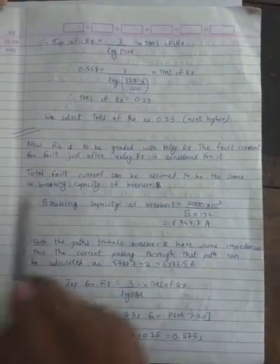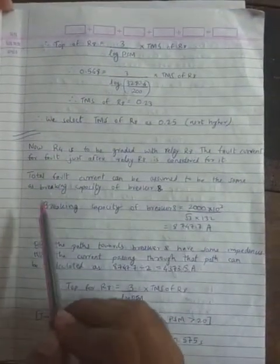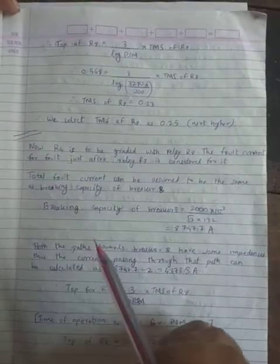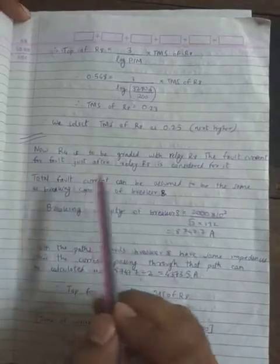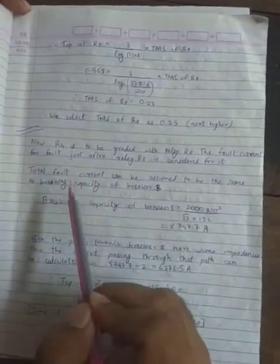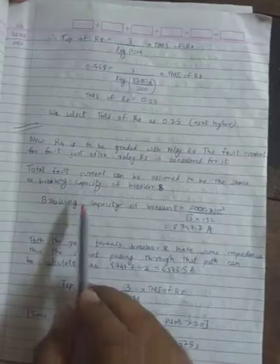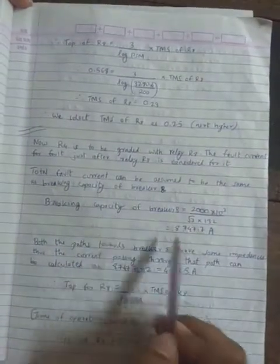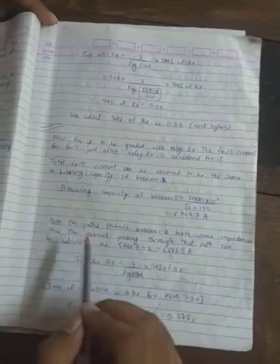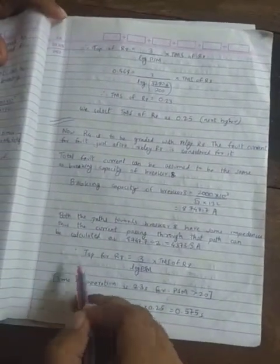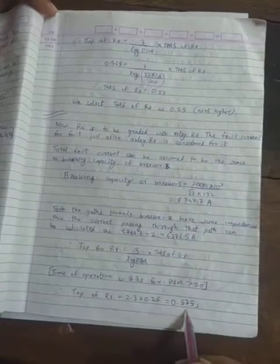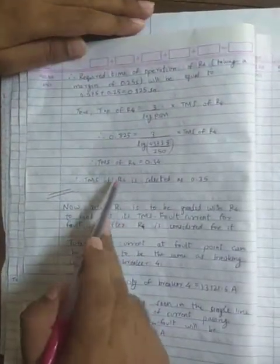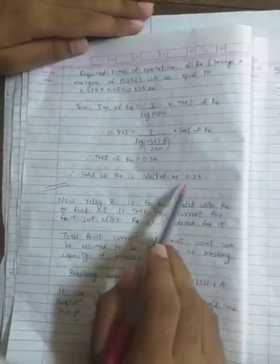Now similarly, we have to find out the settings for TMS of R4. R4 has to be graded with respect to R8. The TMS for R8 is found out. And now we have to find out for R4. The breaking capacity for breaker 8 is this. And then following the same steps as above, we find out that the time of operation of R8 comes out to be 2.3 into 0.25, that is 0.575 seconds. And thus we can find out the TMS for R4. Then it comes out to be 0.35.